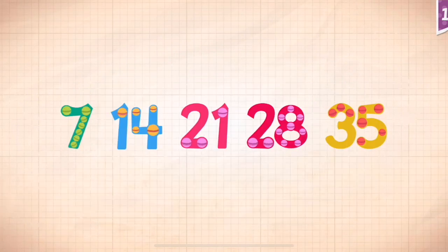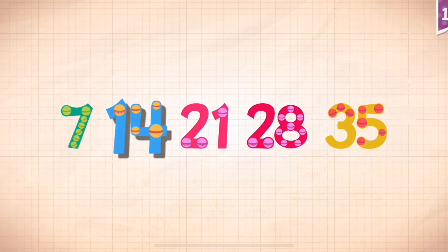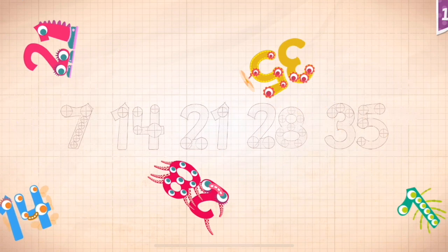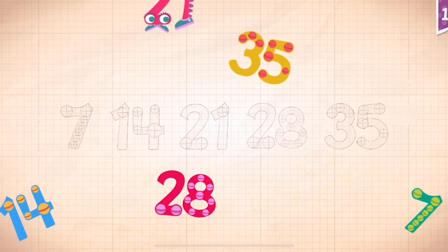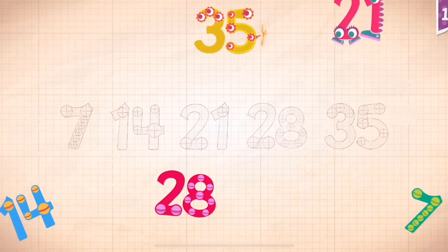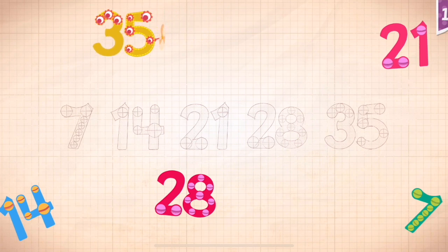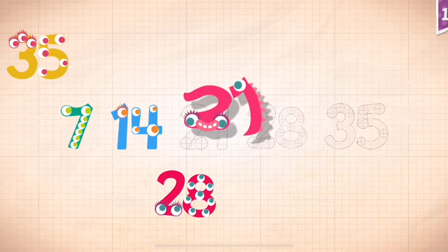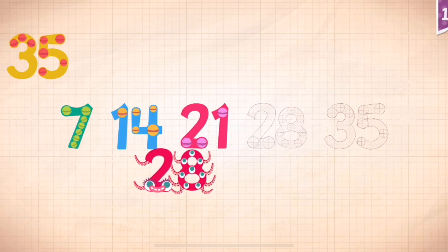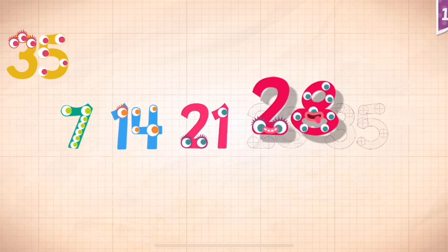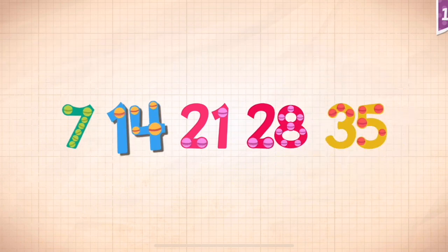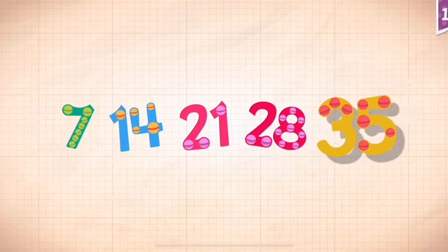Count by 7s: 7, 14, 21, 28, 35. 7, 7, 14, 21, 21, 28, 28, 35, 30, 35. 7, 14, 21, 28, 35.